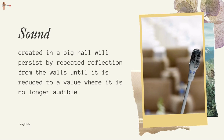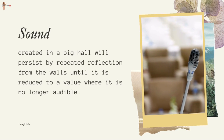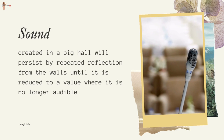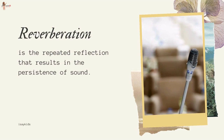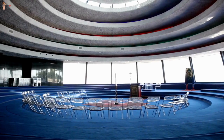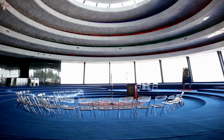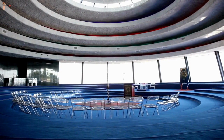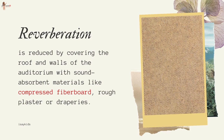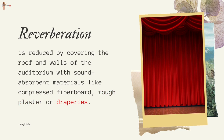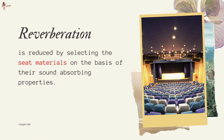Reverberation: A sound created in a big hall will persist by repeated reflection from the walls until it is reduced to a value where it is no longer audible. The repeated reflection that results in this persistence of sound is called reverberation. In an auditorium or big hall, excessive reverberation is highly undesirable. To reduce reverberation, the roof and walls of the auditorium are generally covered with sound-absorbent materials like compressed fiberboard, rough plaster, or draperies. The seat materials are also selected on the basis of their sound-absorbing properties.